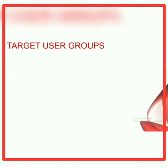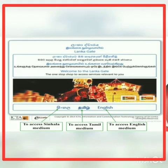Target user groups example: the website www.srilanka.lk. In this website we can see links to different language preferences — Sinhala, Tamil, and English.